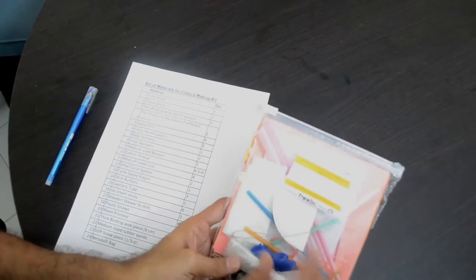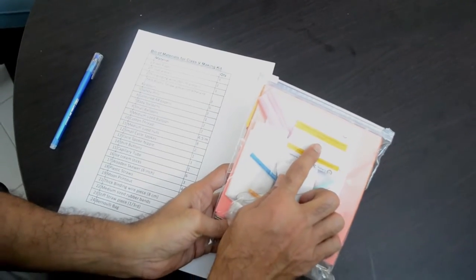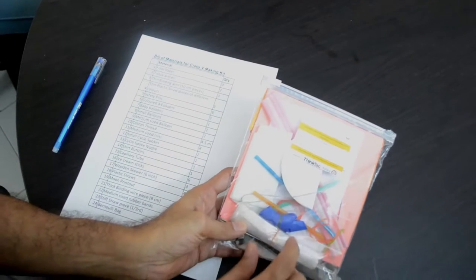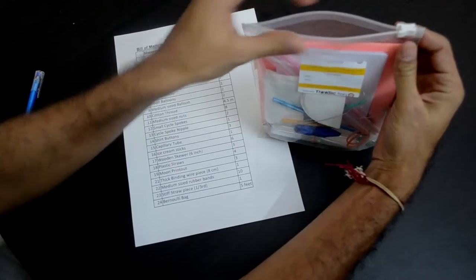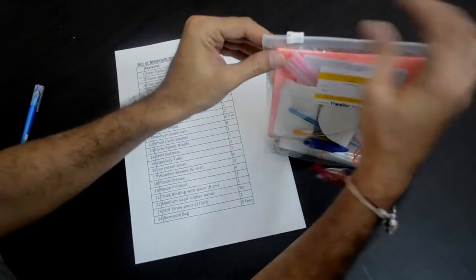In this video we will talk about the material inside the Grade 5 kit. It has 24 items. We will take out one item at a time from the kit and look at the name. We request you to go through this exercise before you start using the kit for doing the activity. Open the ziplock carefully.